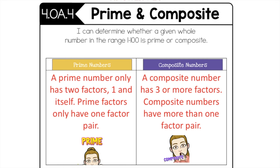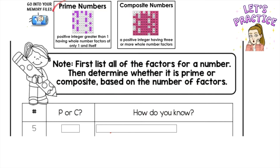That being said, we're going to go and practice right now. I brought over these vocab cards because I want you to go into your memory files. This isn't just supposed to be memorizing — you want to apply your knowledge when we practice. The note says: first list all the factors for a number, then determine whether it is prime or composite based on the number of factors. What they're asking is not to just hope you're right. They're asking you to show how you know.